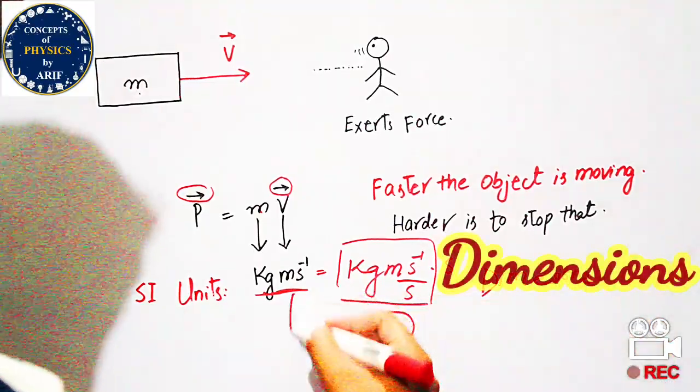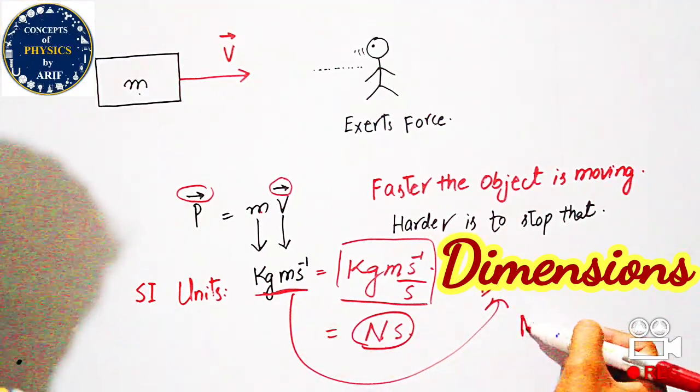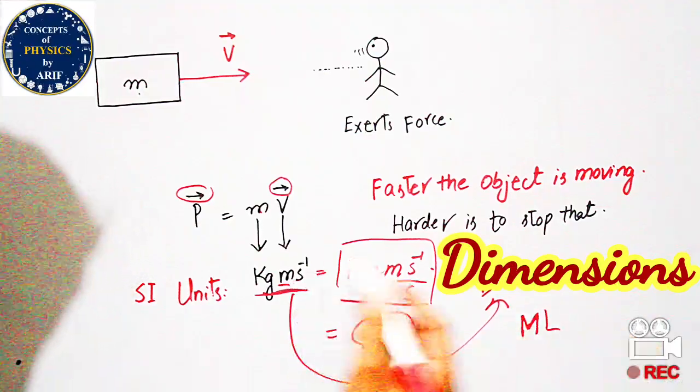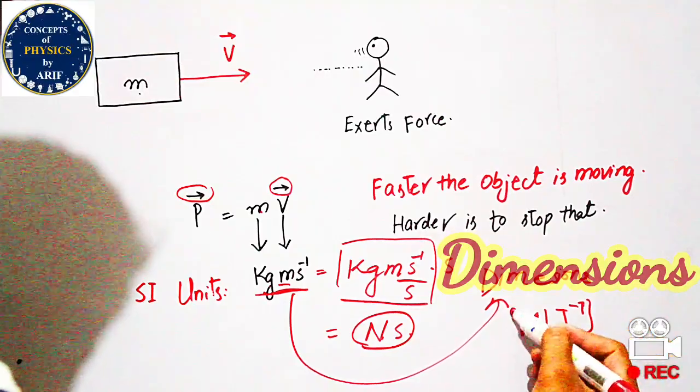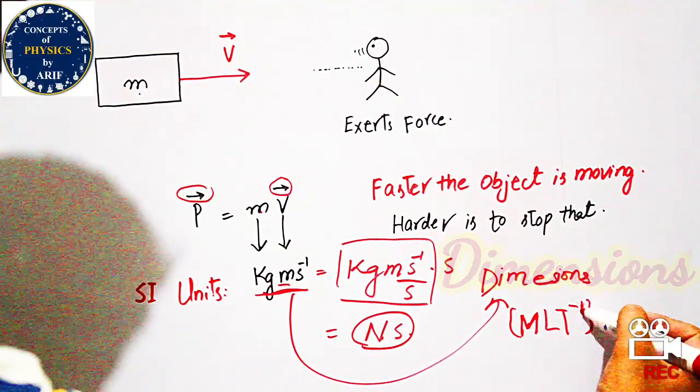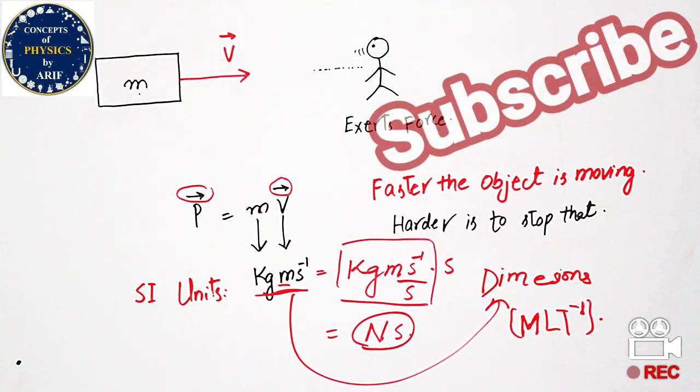We can also write the dimensions. The dimension of kilogram is M, the dimension of meter is length L, and the dimension of second is time T. This gives us MLT inverse, or MLT⁻¹.